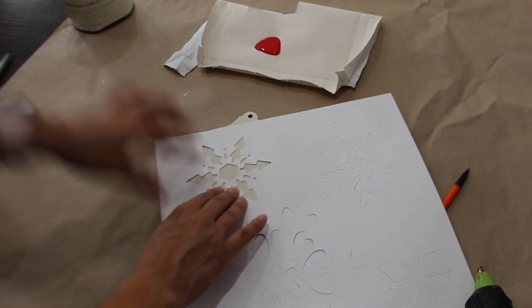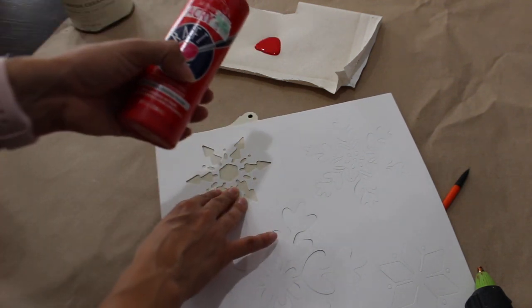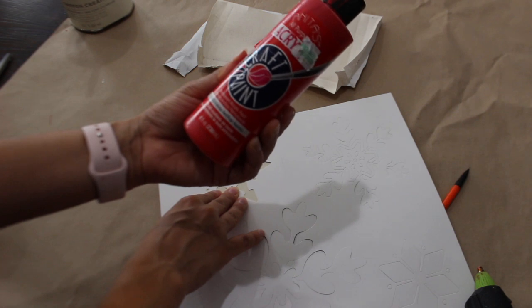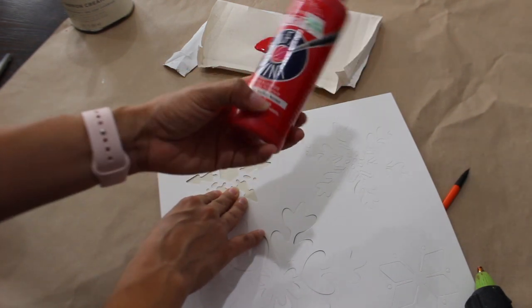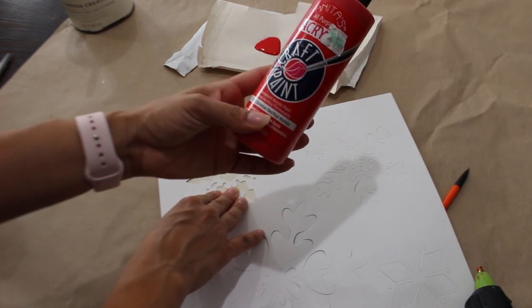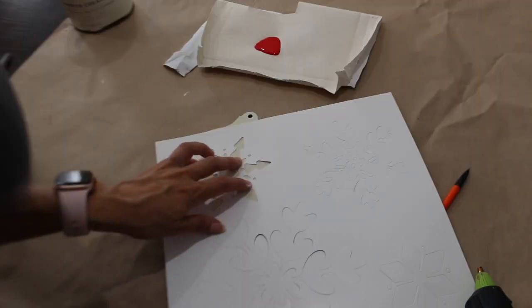I'm using this red paint. Normally I always use the Apple Barrel paints, but I've been having this one, so I decided to use this. This is a Christmas red that I bought from Hobby Lobby. I'm just taking a stencil brush like I normally do. You can use a sponge brush as well.